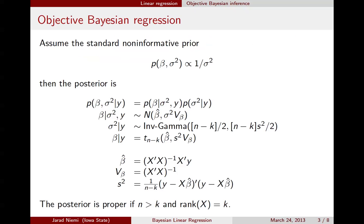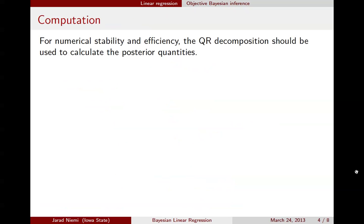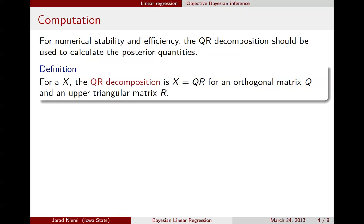So we could use these equations right here to go ahead and calculate these hyperparameter values, but it turns out this will not be efficient nor numerically stable. And so instead, we'll use the QR decomposition. For a matrix x, the QR decomposition is just a matrix Q, which is orthogonal, times a matrix R, which is upper triangular. This is actually orthonormal, a matrix of orthonormal columns.